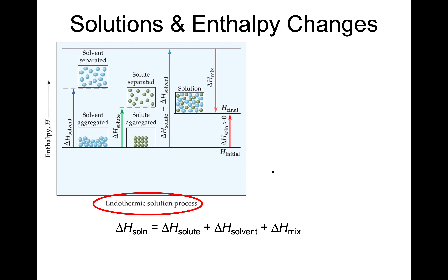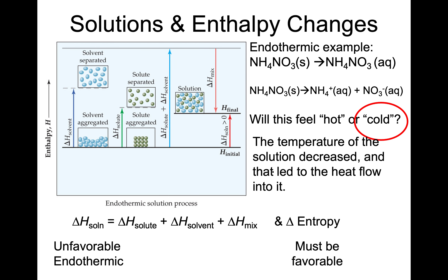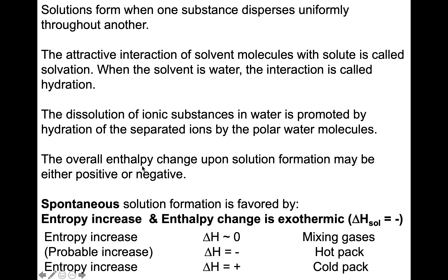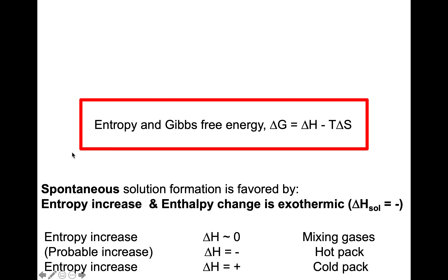Here's what it looks like if it's an endothermic change. Ammonium nitrate is an example. Macroscopically, endothermic means it's going to feel cold. The overall enthalpy change is unfavorable when it's endothermic. So in order to explain the spontaneous solution formation, entropy must be favorable in this case. Summary of that section: the different cases where entropy is or is not important. What I'm trying to do here is take a baby step in the direction of introducing entropy and Gibbs free energy — when entropy is or is not important in the solution process.